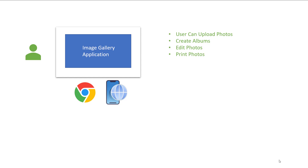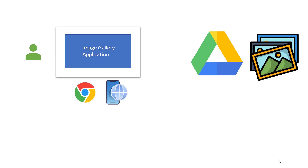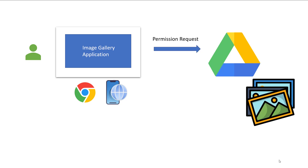Now, everyone is using cloud services to store images like Google Photos, iCloud, or Google Drive. If you want to access photos stored in your Google or Facebook account from this image gallery application, you have to provide permissions for the application to access your account. You can't just hand over your username and password because the application could store your credentials in a database, and if a hacker gets access to that database, you are in trouble. We need a safe way to authorize the image gallery application — that's exactly what OAuth was developed for.